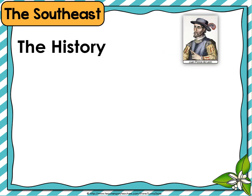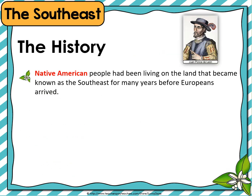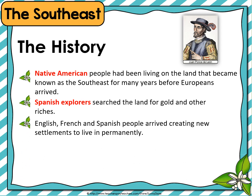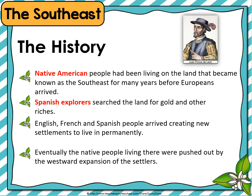The history of the southeast. Native American people had been living on the land that became known as the southeast for many years before Europeans arrived. Spanish explorers searched the land for gold and other riches. English, French, and Spanish people arrived, creating new settlements to live in permanently. Eventually, the native people living there were pushed out by the westward expansion of the settlers.